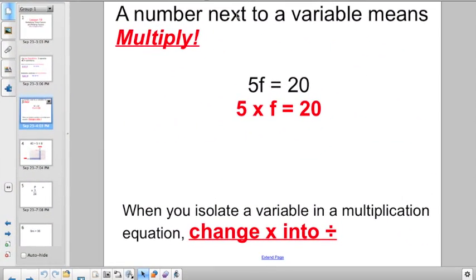A number next to a variable means to multiply. If you see this, and you will, a number next to a variable, 5f equals 20, it just means multiply. 5f means exactly the same as 5 times f equals 20. You can write it out either way. And here's what you need to know. When you isolate a variable in a multiplication equation, just go ahead and change times into divide. Not like subtraction where you have to worry if it's the first term or the second term is the variable. Just if it's a multiplication equation, when you isolate, you always change it to divide.